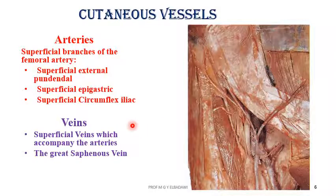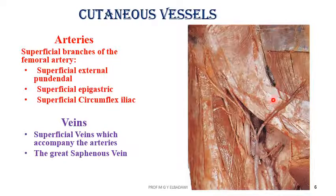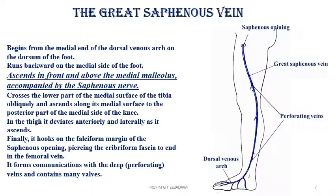The veins are those accompanying the superficial arteries we have mentioned. But the main one is the great saphenous vein — the largest vein found on the front of the thigh. It receives the three superficial veins accompanying the three superficial arteries of the femoral artery. The great saphenous vein is a very large vein, starting from the dorsum of the foot, ascending up through the leg to the thigh, where it ends in the femoral vein.